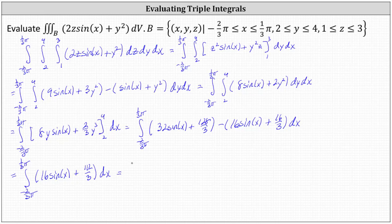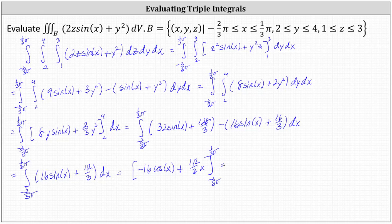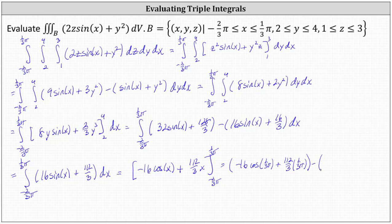Now we integrate with respect to X. The integral of 16 sine X is negative 16 cosine X, and plus the integral of 112-thirds with respect to X is 112-thirds X. We then determine F of one-third pi minus F of negative two-thirds pi, giving us negative 16 cosine one-third pi plus 112-ninths pi, minus negative 16 cosine negative two-thirds pi plus 112-thirds times negative two-thirds pi.